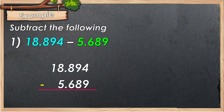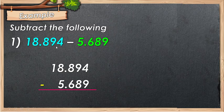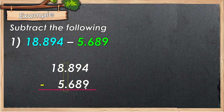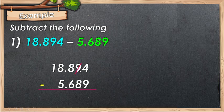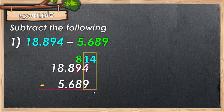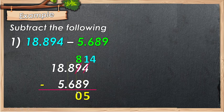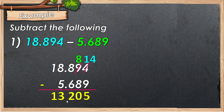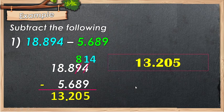Let's have some examples. First, we have 18.894 minus 5.689. Align the decimal in column. Then subtract as whole numbers. 4 minus 9 cannot be, so borrow from 9. 9 becomes 8 and 4 becomes 14. 14 minus 9 is 5. 8 minus 8 is 0. 8 minus 6 is 2. 8 minus 5 is 3, then bring down 1. Place the decimal point. The answer is 13.205.